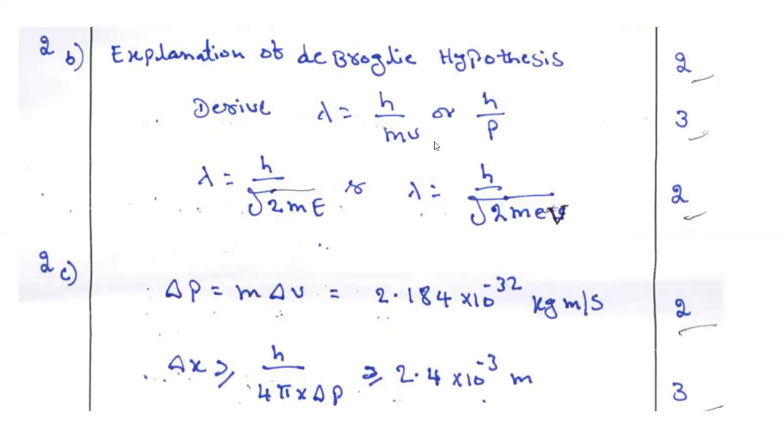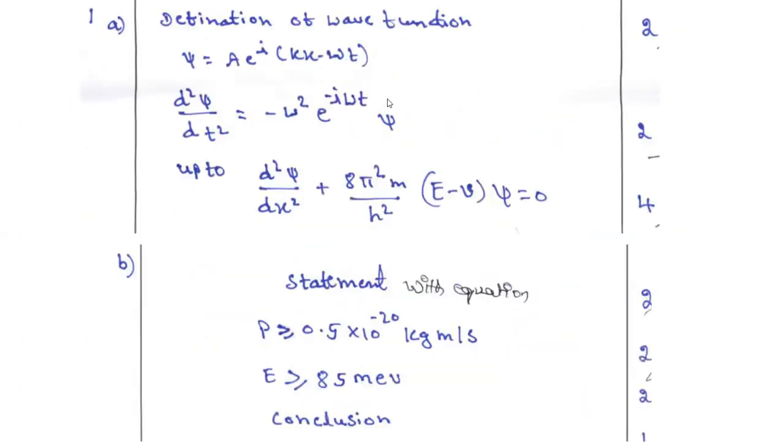Write down the equation lambda is equal to h by mv. mv is nothing but p, h by p, mass into velocity. That is p. Then we can call it as momentum. Then lambda is equal to h by square root of 2mv. From this substitute accordingly, you will be able to get the answer. It carries total seven marks. Question number 2B.